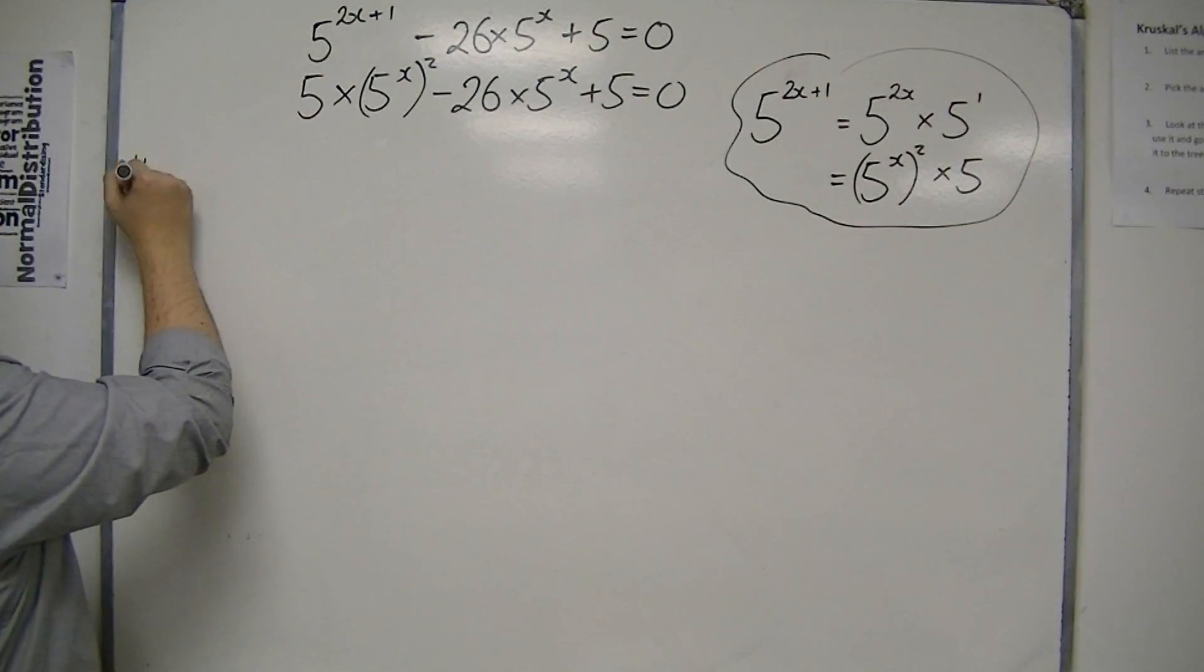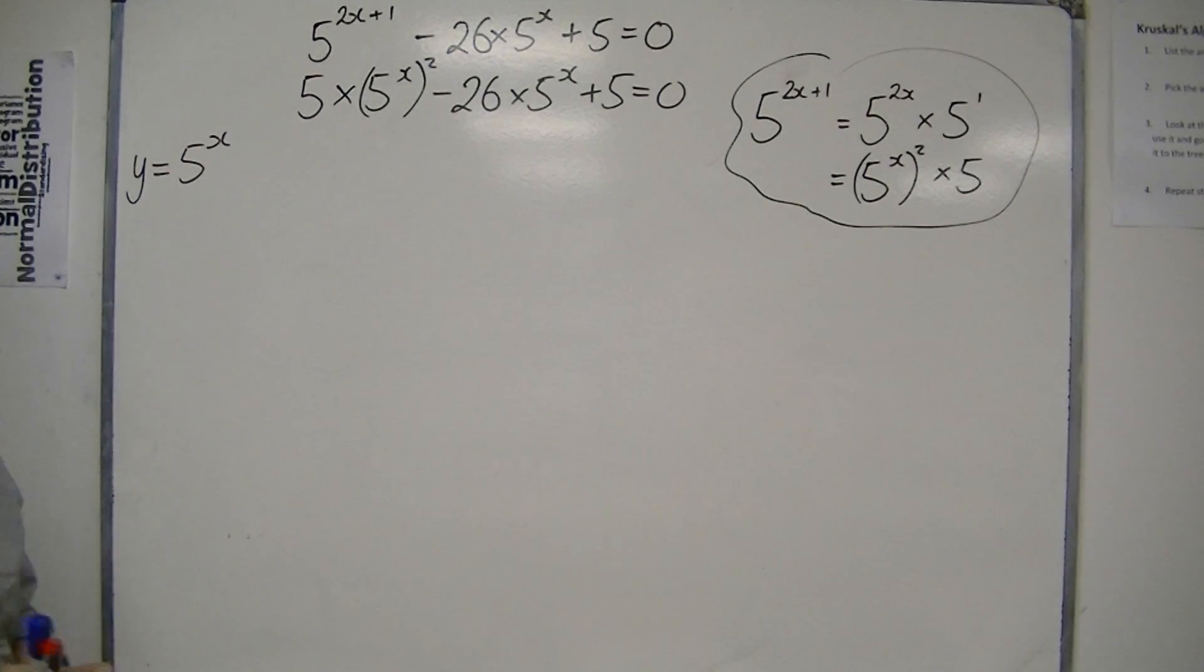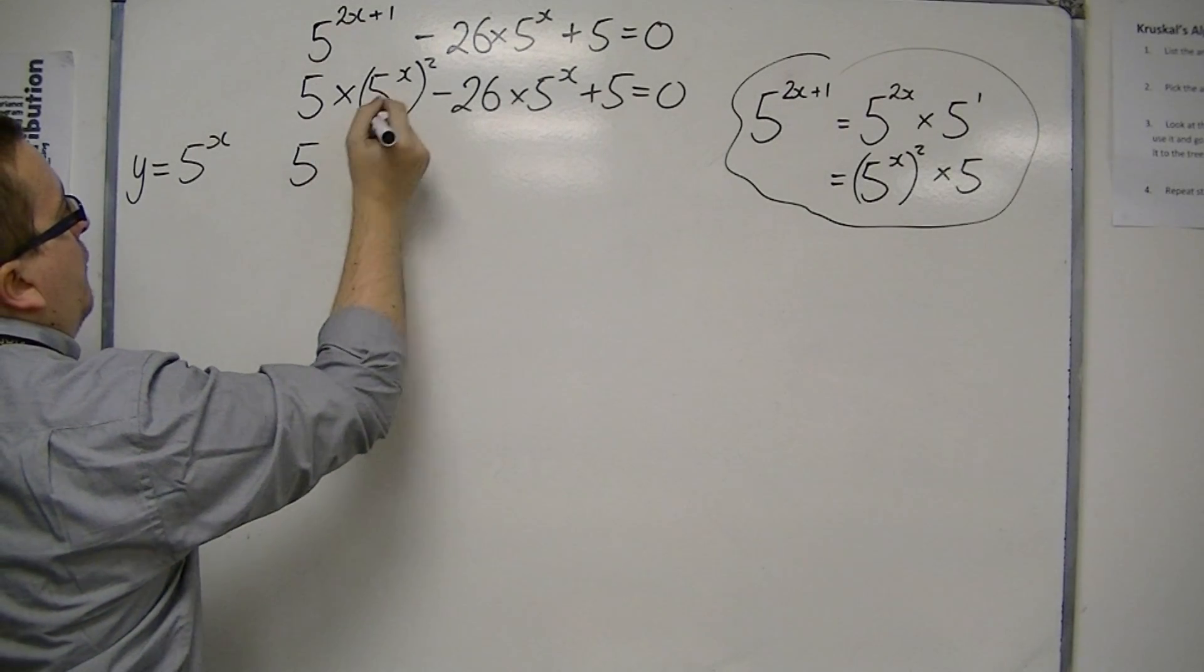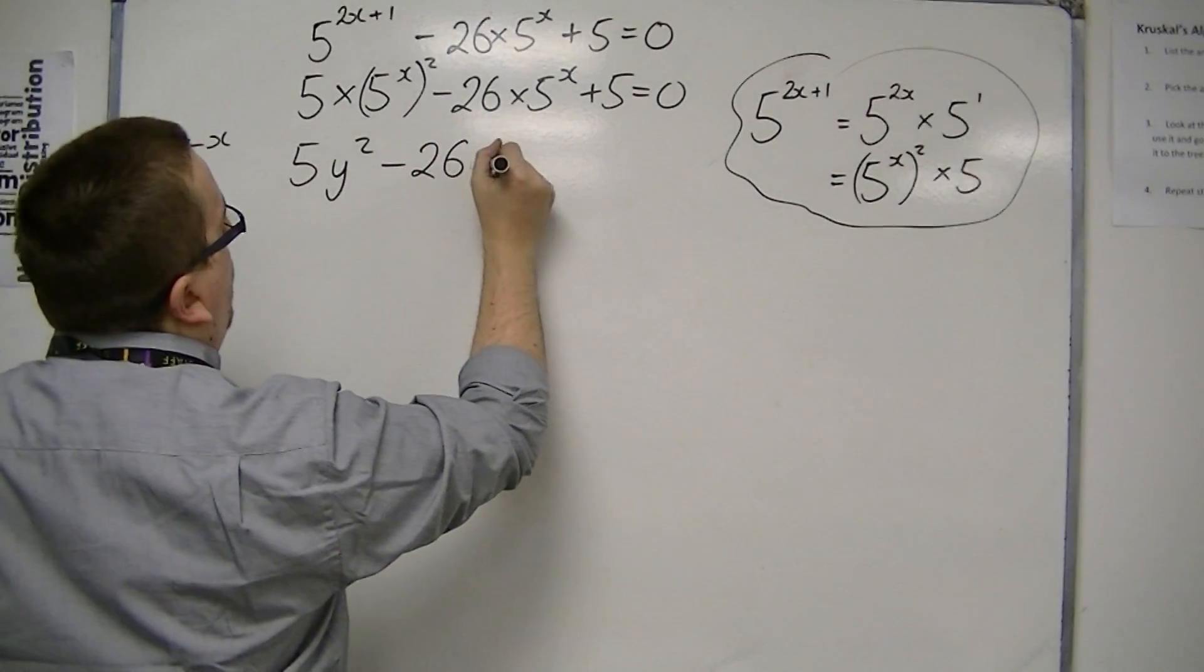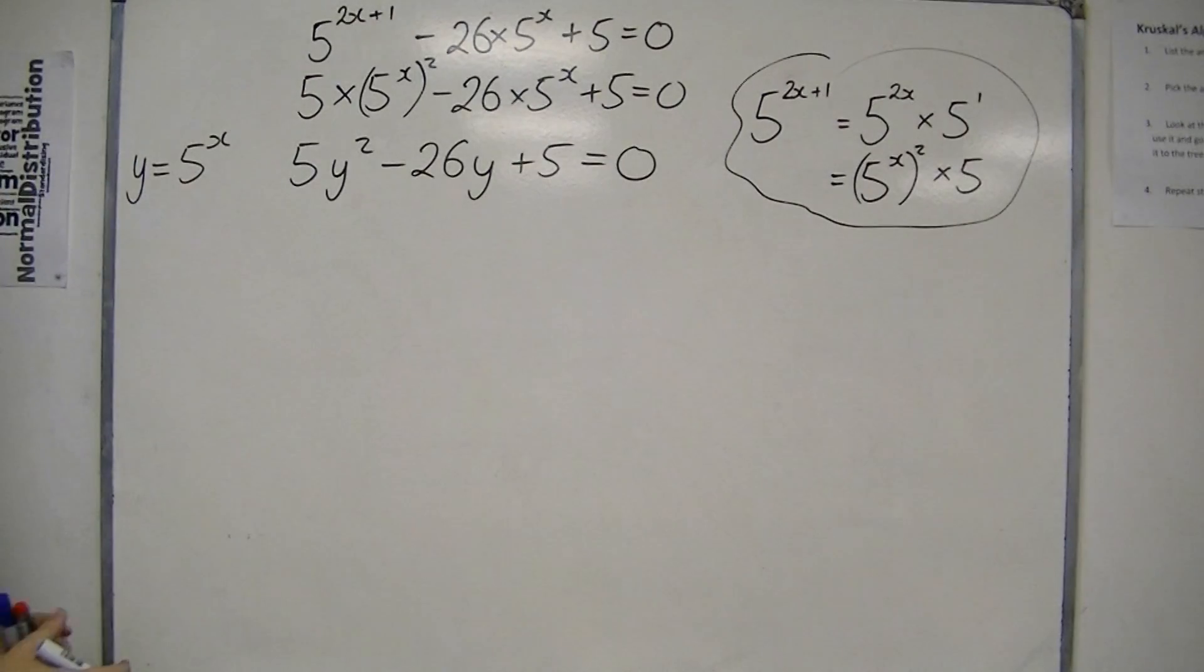Now I'm going to make the substitution, as we have in the previous examples. So y equals 5 to the x in this case. So I've got 5 lots of 5 to the x all squared, so 5 lots of y squared, take away 26y plus 5 is 0.